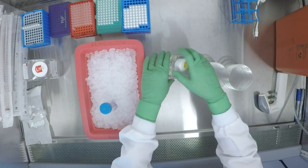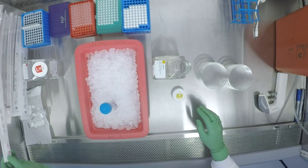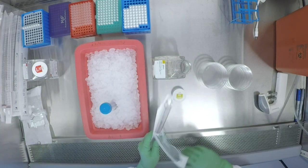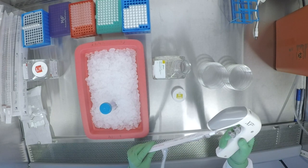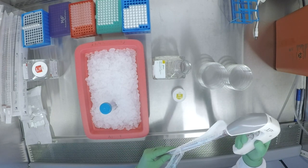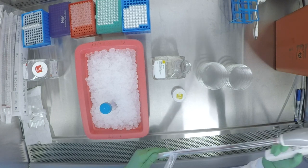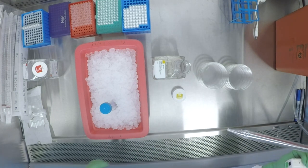To dilute the Matrigel we use a phenol red free DMEM F12 that has been chilled in the refrigerator, and we use the manufacturer recommended 1 to 30 dilution as we found that works best.